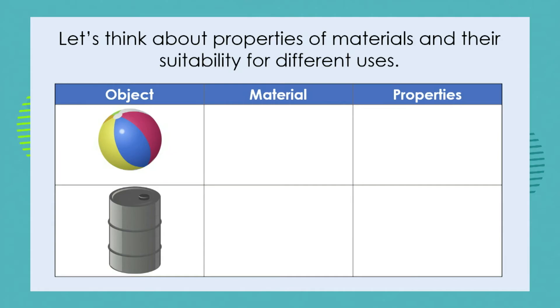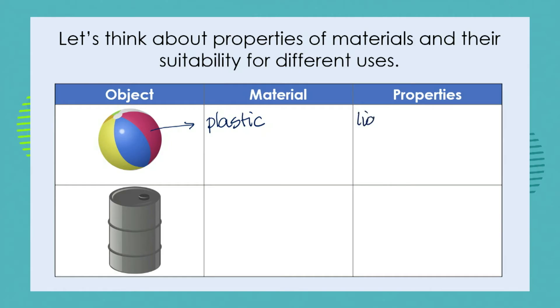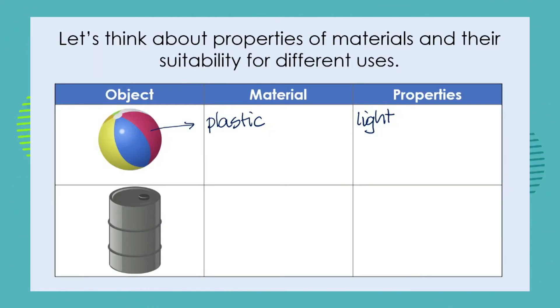Let's think about the properties of materials and how suitable they are. We'll start with a beach ball. The material that makes up the beach ball is a kind of plastic. This plastic is very light — not a heavy material — which means we can throw the beach ball and if someone throws it at us, it doesn't hurt us. We also know that the plastic is flexible, which means we can let the air out and the beach ball will deflate, or blow it up and the beach ball will expand.